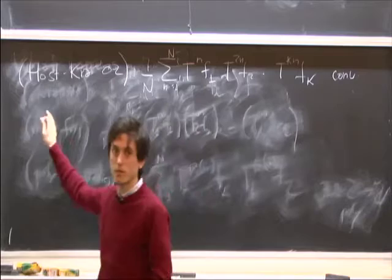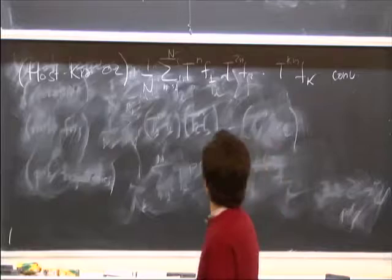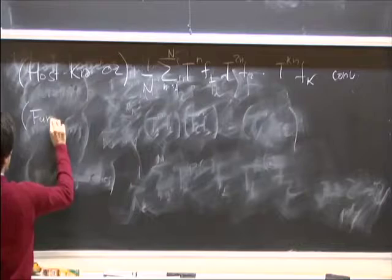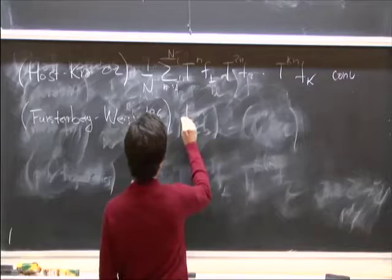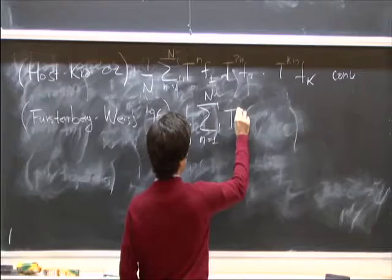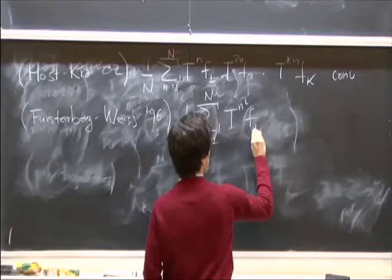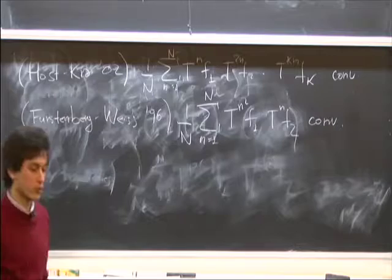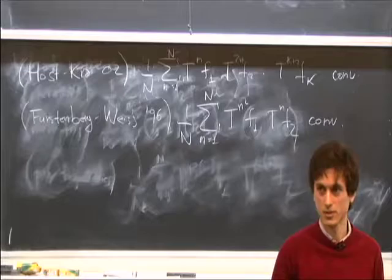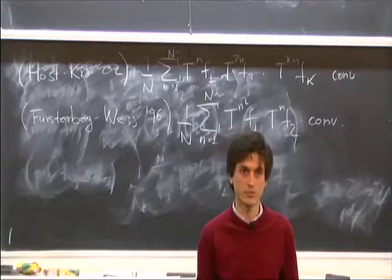The work of Host-Kra is particularly interesting because they give a very nice description of the structure of the limits of these averages, which is very useful. Some years prior to that, there was the result of Host-Maison. They established the convergence of averages where you take one transformation applied as T^{n²} to the first function and T^n to the second function. It was the first nonlinear result, and also the paper where the concept of characteristic factor was first formally introduced.